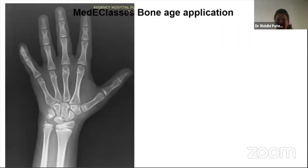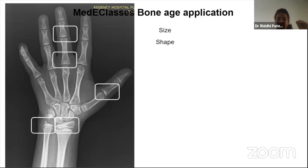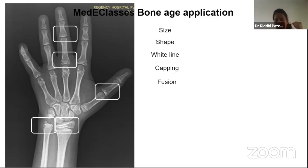The user assesses only five sites based on morphological features: middle phalanx of middle finger, proximal phalanx of middle finger, proximal phalangeal epiphysis of thumb, ulnar epiphysis, and radial epiphysis. For each site, the user selects the size, notes whether a white line is visible on the epiphysis, whether capping has started, and whether fusion has started.